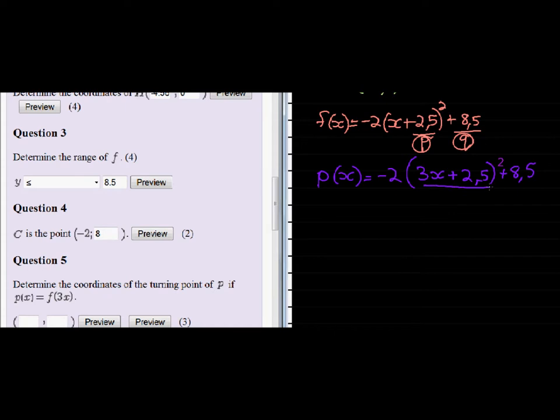Now, this is not the standard form anymore. It should be X minus P, or in this case there's a plus. But still, we don't want that 3 in front of the X. That's okay. We just take it out as a common factor.